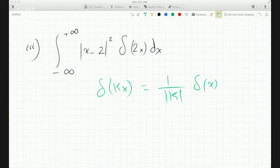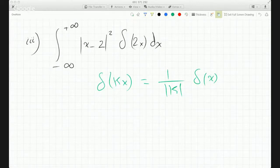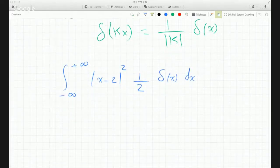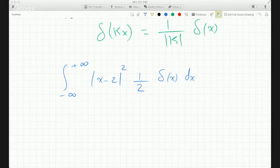Just learn how to work with it, that's what's important. So here, I can replace the 2x. This becomes minus infinity to plus infinity, |x - 2|² and the k is 2, so this becomes 1 over 2 Dirac delta function of x dx. And now, what's that going to do? Well, it's going to pick up the value.